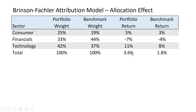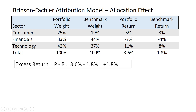My portfolio return I can get by multiplying the sector return — so my returns in each sector — 5% times 25% plus minus 7% times 33% plus 11% times 42%. It's just the weights times the returns summed: I get 3.6%. The benchmark, I do the same — take the benchmark weights, multiply by the benchmark returns, sum those up, and I get 1.8%. So in this case we've outperformed by 1.8%.